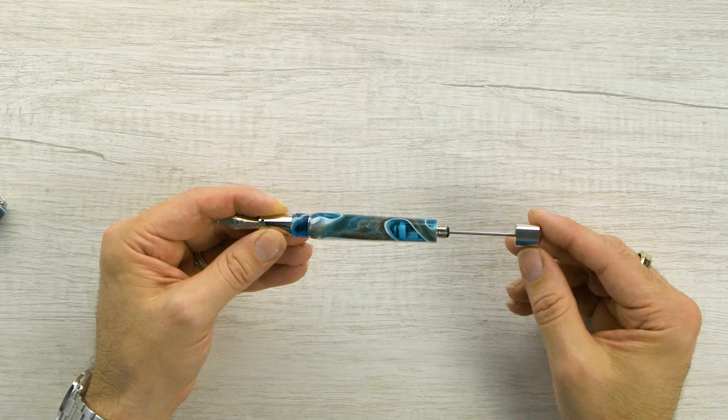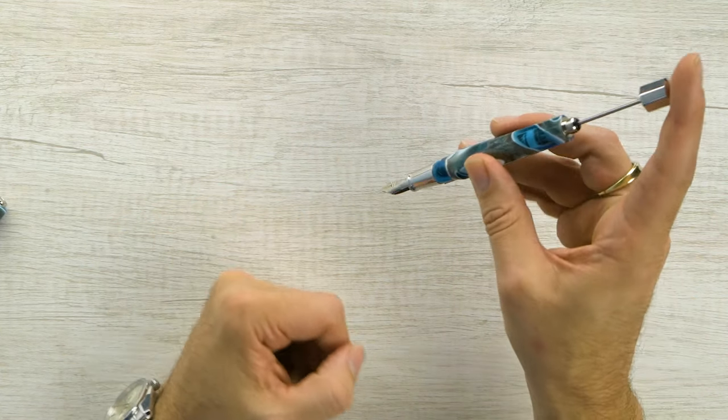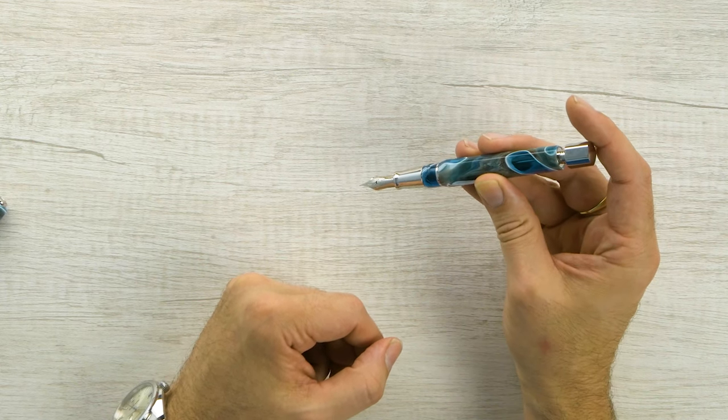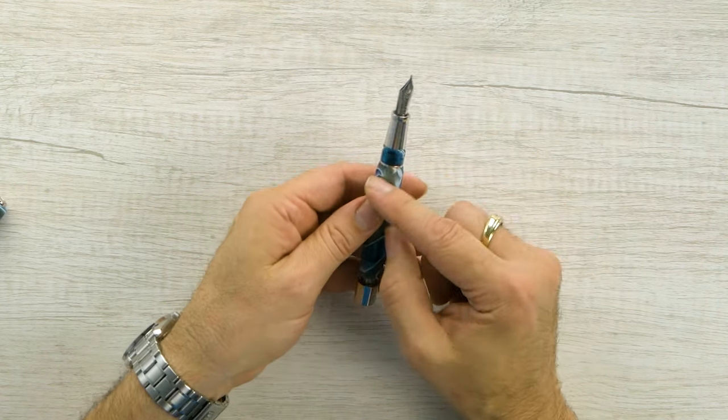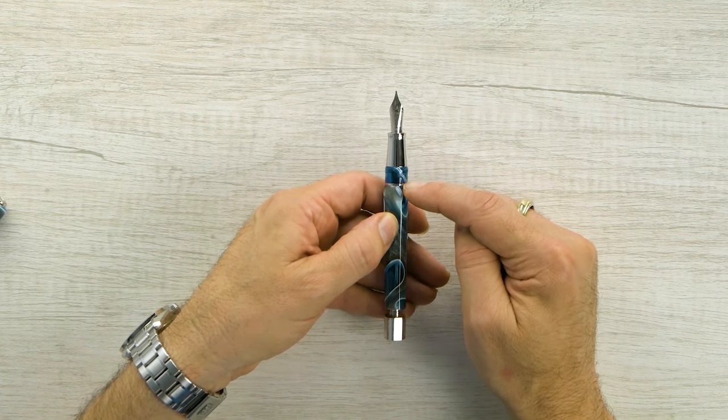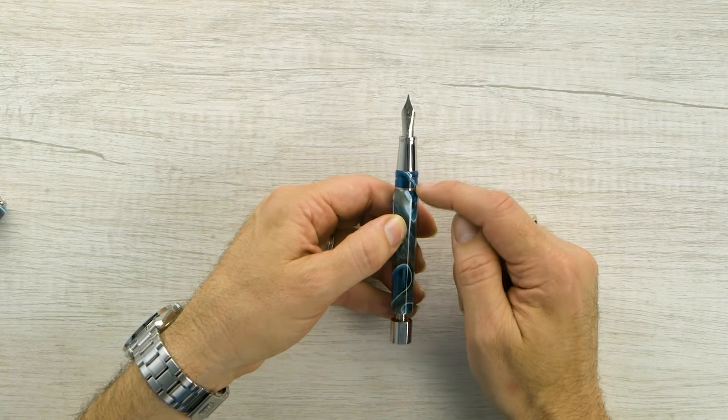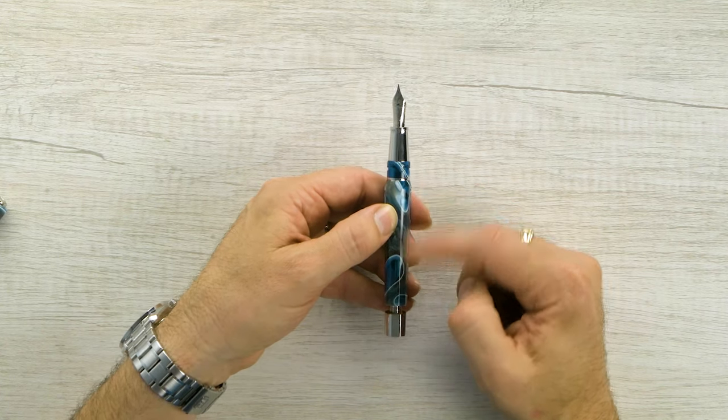And this fills just like your Homo sapiens, your Homo sapiens crystal. You put it in ink, push down, and it fills up. With this, we have the two-stage. So we have this reservoir up here in the front. So if you are traveling, you can keep a little bit of ink up here. And then the rest is locked back in here.